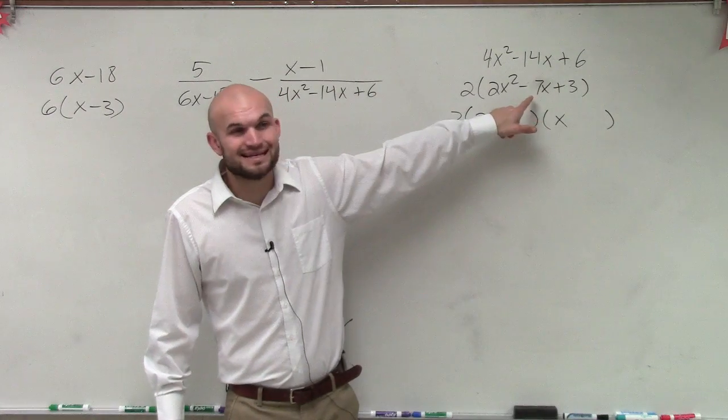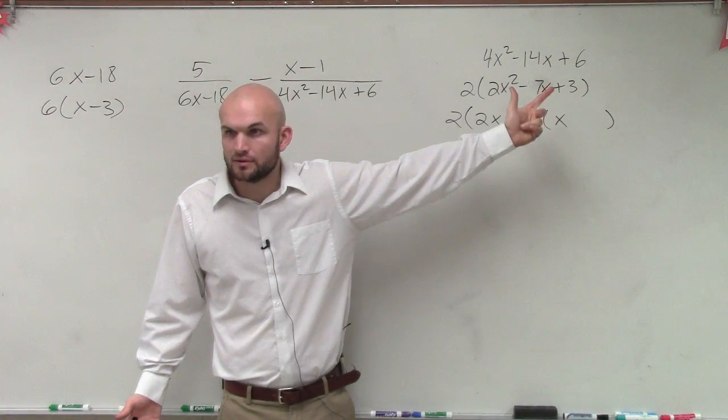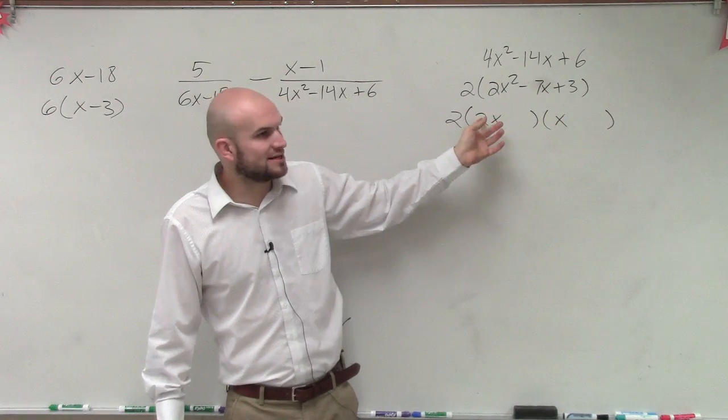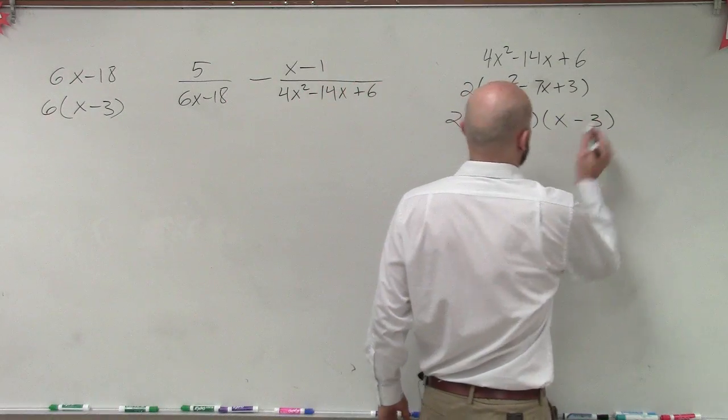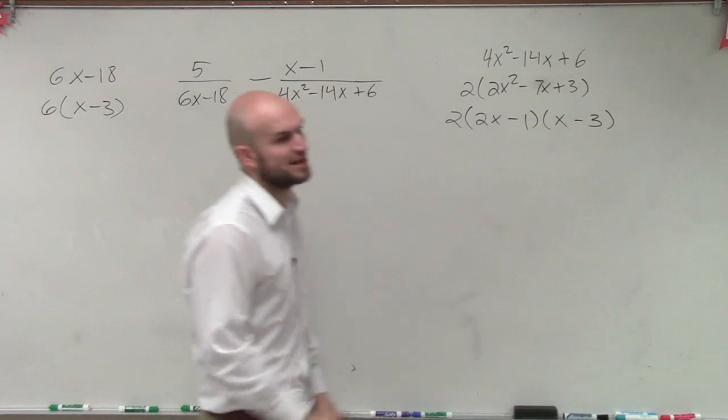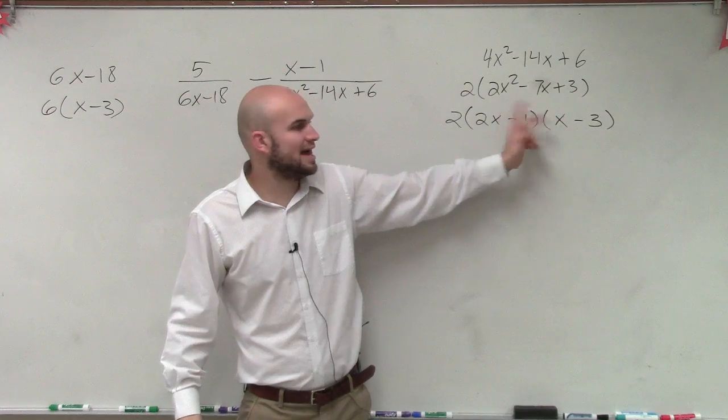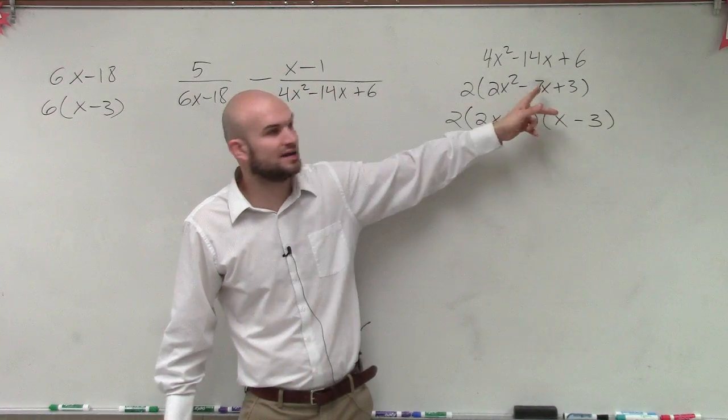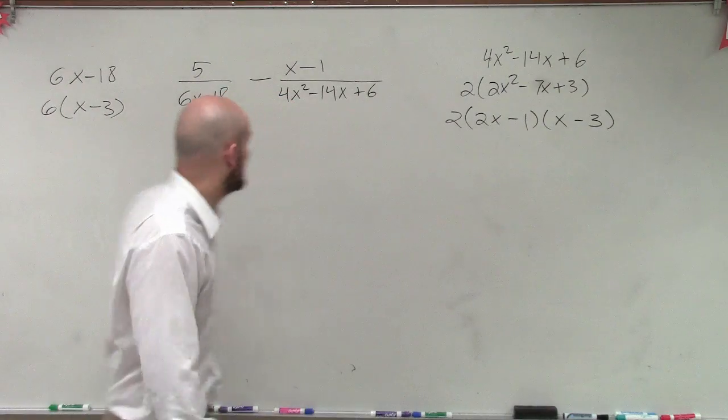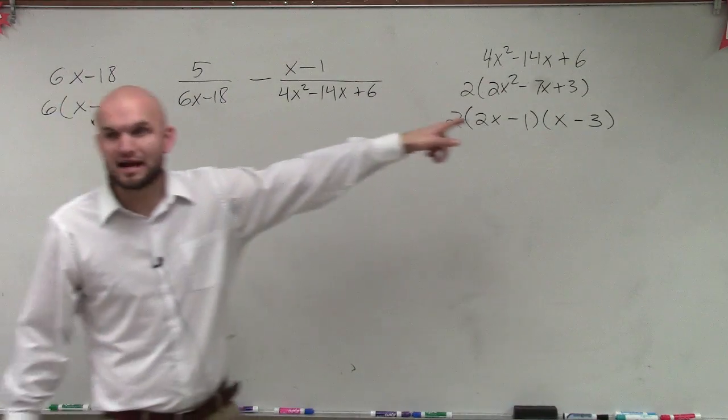And if I multiply 2 to get to 7, I'm going to have to multiply 2 times 3. So that means this is going to be x minus 3 and that would have to be 2x minus 1. Because if I swap those, 2 times negative 1 would give me negative 2, and x times negative 3 would give me negative 3x. That would give me negative 5, but I need negative 7. And FYI, do you guys notice there's that factor there? x minus 3. Wow, yeah, same factor.